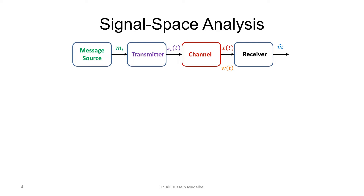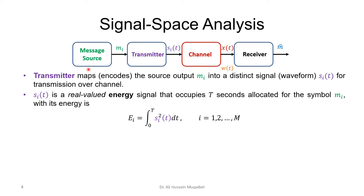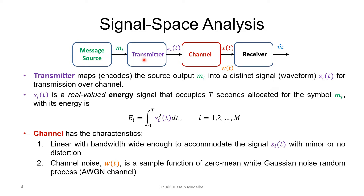Now let's move to the transmitter. The transmitter maps the encoded output symbols mi into distinct signal waveforms and puts the symbol in the proper format for transmission over the channel. Those waveforms, referred to here as si, are real-valued energy signals that occupy T seconds and are allocated for the given symbol mi. The energy of each transmitted waveform is E_i, which is the area under the square of the curve — we integrate over the duration of one symbol.